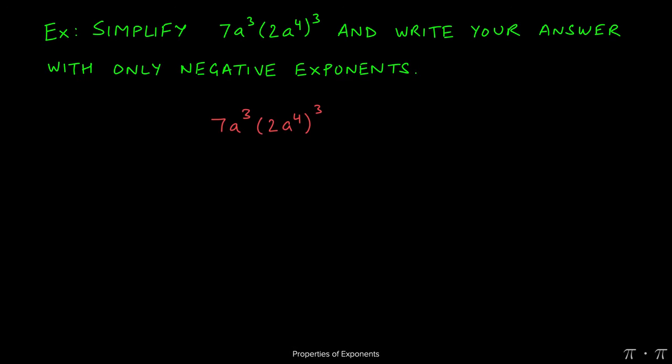Let's say we're asked to simplify 7a cubed times the quantity 2a to the fourth all raised to the third power, and we're asked in this problem to write our answers with only negative exponents.